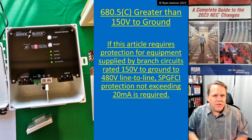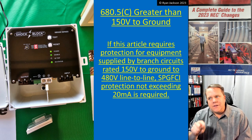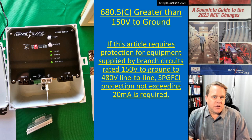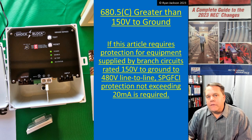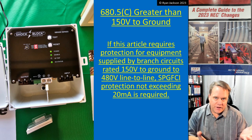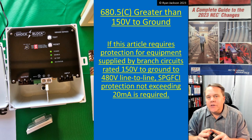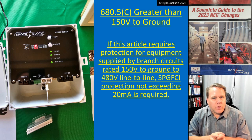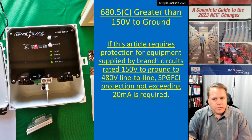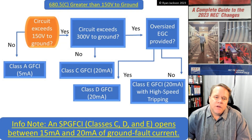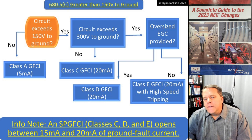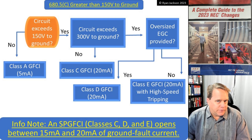Until now, we acknowledged the risk and knew the hazard but didn't really have any good ways to alleviate it. So in the 2023 code, for those higher-voltage motors and equipment, we can use special purpose GFCI. There's an informational note added that says an SP GFCI — Class C, D, or E — opens between 15 milliamps and 20 milliamps of ground fault current.